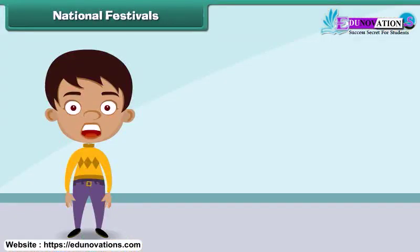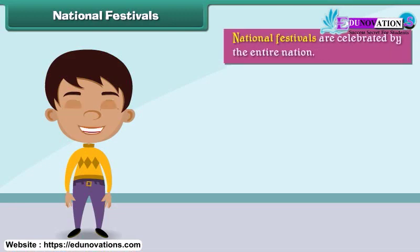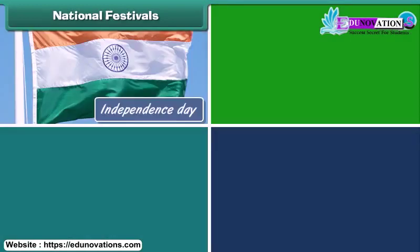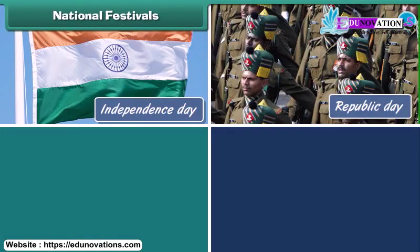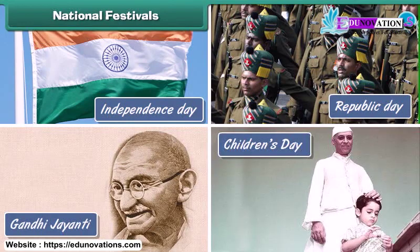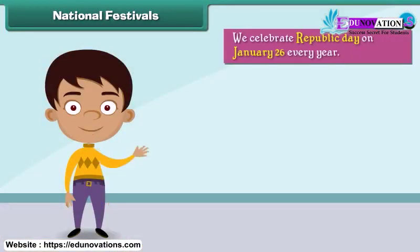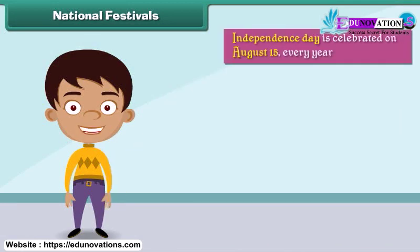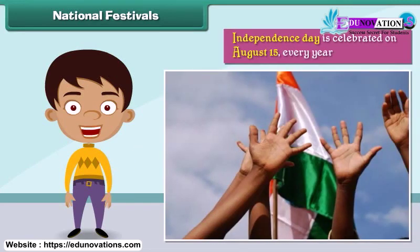National festivals are celebrated by the entire nation. Some important national festivals celebrated with great enthusiasm in India are Independence Day, Republic Day, Gandhi Jayanti, and Children's Day. We celebrate Republic Day on January 26 every year — on this day the Constitution of India came into force. Independence Day is celebrated on August 15 every year, the day India got freedom from the British.